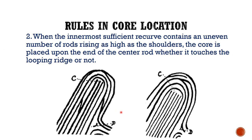Rule number two: when the innermost sufficient recurve contains an uneven number of rods rising as high as the shoulders, the core is placed upon the end of the center rod whether it touches the looping ridge or not. For example, with rods one, two, and three — an odd number — the core is placed at the end of the center rod. The same applies to five rods: the core is placed at the end of the center rod. This rule applies to odd numbers of rods.